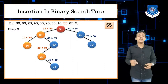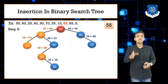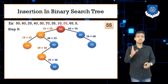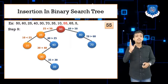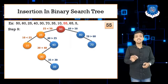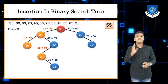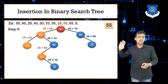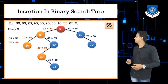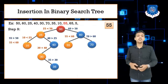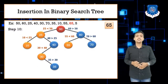Step 9: next value is 55. Compare 55 with 50 — 55 is greater than 50, so move right. Compare 55 with 60 — 55 is less than 60, so move to the left side of 60 and insert 55 there.